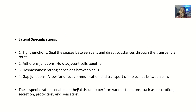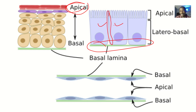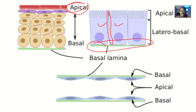Then we have the lateral specialization — how cells communicate side by side. They can form tight junctions, which seal the spaces between cells and direct substances through the transcellular route. If the junction is open, substances enter between the cells, but if it's tight, substances have no choice but to go through the cell.